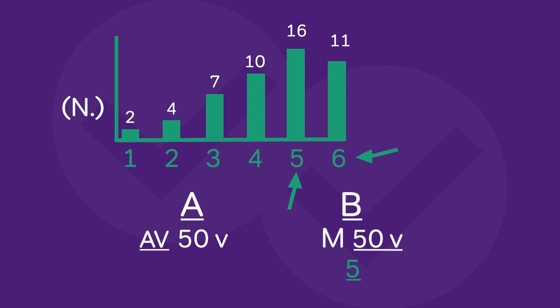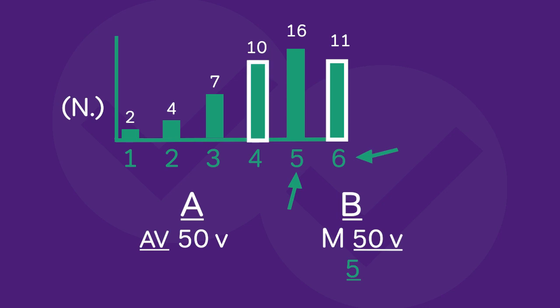Let's assume the average is 5. If the average is 5, we have 11 sixes over here. For us to have an average of 5, we would need 11 fours — then this would balance out nicely at 5. We have 10 fours, which is one less than the number of sixes, so it's slightly skewed towards 5. But then look at this — we have all these numbers down here: 1s, 2s, and 3s. There's just really pulling this average away from 5, much less than 5.